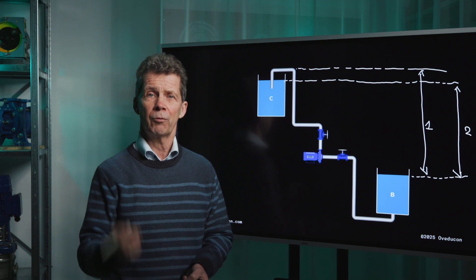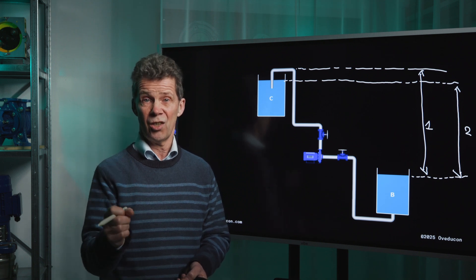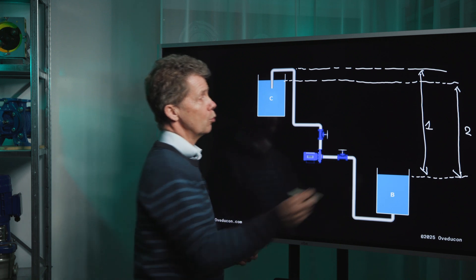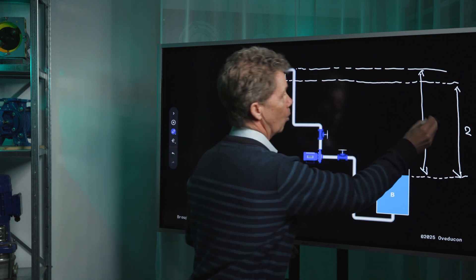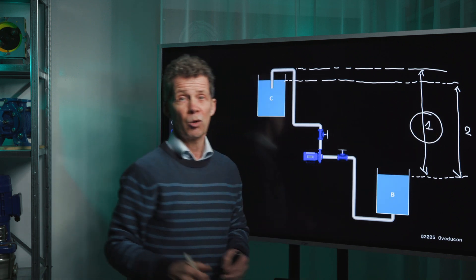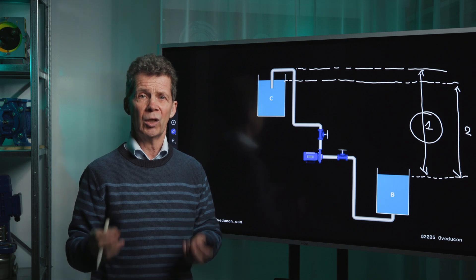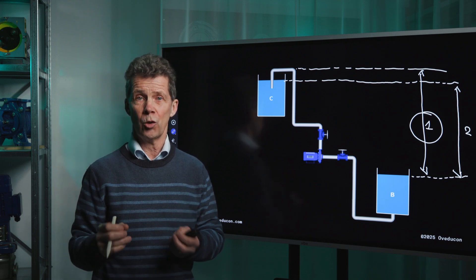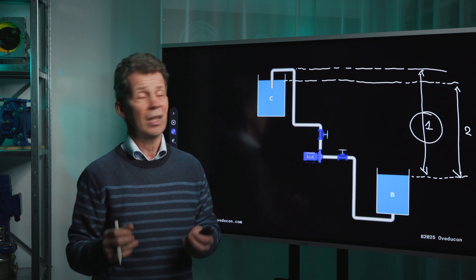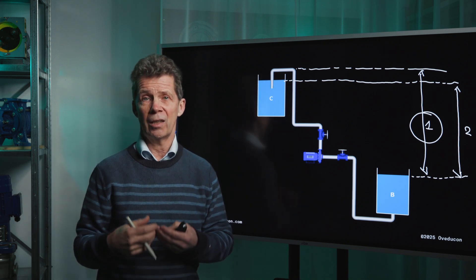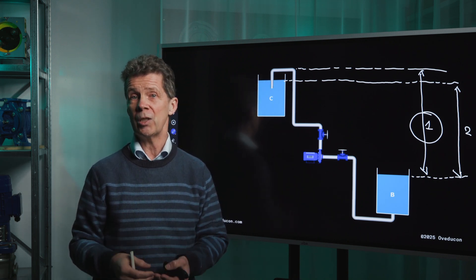For your centrifugal pump sizing process you have to use the first situation — the empty discharge line — because you always have to work for the worst case situation, and that is when your discharge line is not yet filled with medium. Now you know what static head is.